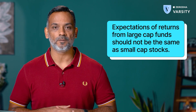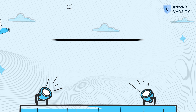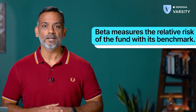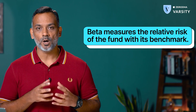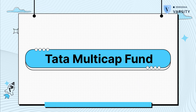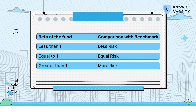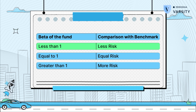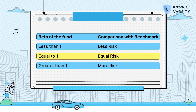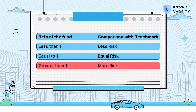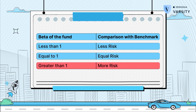Next up is the beta of a mutual fund. The beta of a mutual fund measures the relative risk of the mutual fund with respect to its benchmark. Here is the beta of Tata Multi-Cap Fund. As you can see, the Tata Multi-Cap Fund is benchmarked against SNP BSE 500, and the beta of this fund is 0.95. If the beta is less than 1, then it's expected that the fund is less risky compared to its benchmark. If it is equal to 1, the fund is as risky as the benchmark. If the beta is higher than 1, then the fund is expected to be far more riskier than the benchmark itself.